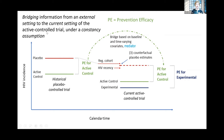Broadly, some of the language we'll be using: we talk about bridging information from an external setting — where the external setting could be an earlier time point for the same population or a similar population in a different setting — and that bridging is usually based on covariates. When talking about bridging from an external setting to the current active control trial, most talks are using a constancy assumption — either that HIV incidence has remained relatively constant spanning the historical to current active control, or that the prevention efficacy observed in historical placebo-controlled trials remains constant for the active control trial and the counterfactual placebo.